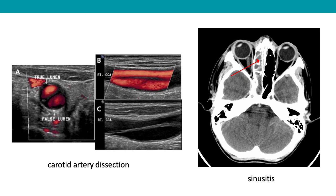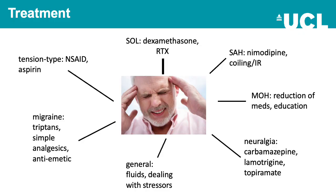How you manage acute headache depends on the cause. For tension-type headache, NSAIDs and aspirin should usually suffice. For migraine, triptans, simple analgesics, and antiemetics are useful. For a space-occupying lesion, treatment includes dexamethasone, radiotherapy, and plus or minus surgery. For subarachnoid hemorrhage, treatment includes nimodipine and coiling or other interventional radiology strategies. Medication overuse headache is managed by reduction of the offending medication and patient education. Neuralgia can be treated with medications such as carbamazepine, and general headaches with fluids and addressing any stressors.